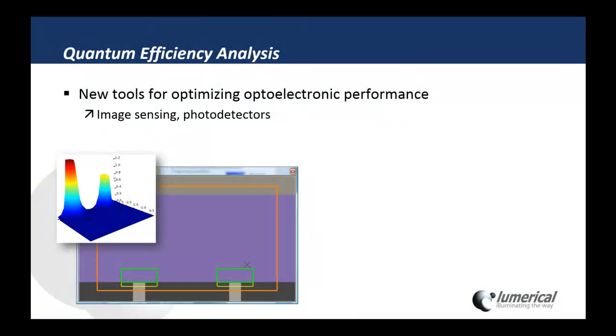For quantum efficiency analysis, we've introduced new tools for optimizing optoelectronic performance, including for applications such as image sensing and photo detection. Here we have a model device with two contacts on the bottom surface, a left channel and a right channel, which will be collecting photo-generated carriers. Electrostatic potential profile is shown in the plot in the upper left.